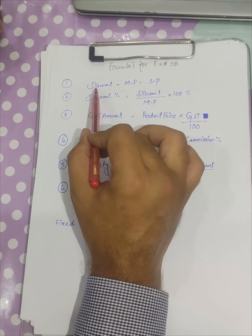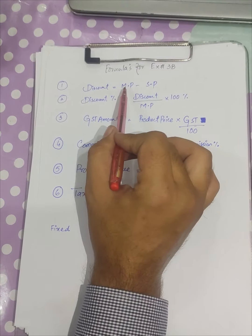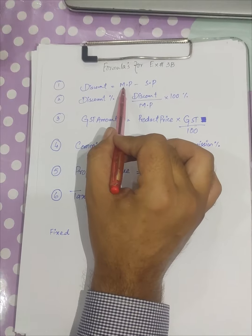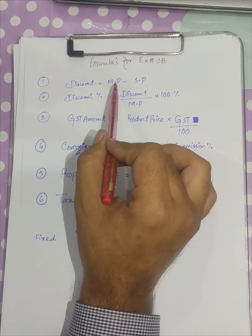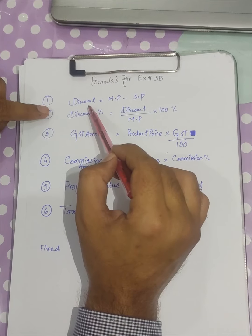First of all, we will discuss how we can calculate the discount. For that, we will simply subtract the sale price from the mark price. Mark price is the value that is mostly written on the products, and the sale price is the value at which the product is sold. Their difference will be called discount.